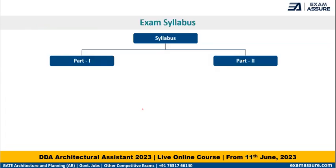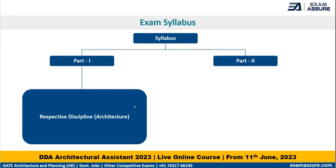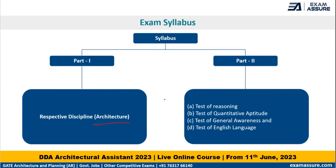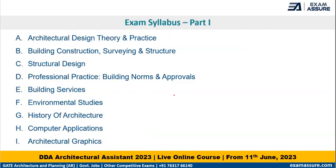As far as the syllabus is concerned, it can be divided into two parts. Part one consists of questions related to architecture, covering sections such as architectural design and theory, building construction, building services, structural design, environment, history of architecture, computer applications, and architectural graphics. More or less, all of this is related to what we study in the five-year or ten-semester course of architecture.